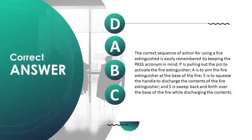The correct sequence for using a fire extinguisher is remembered with the PASS acronym: P — pull out the pin to activate the extinguisher; A — aim at the base of the fire; S — squeeze the handle to discharge the contents; S — sweep back and forth over the base of the fire while discharging.